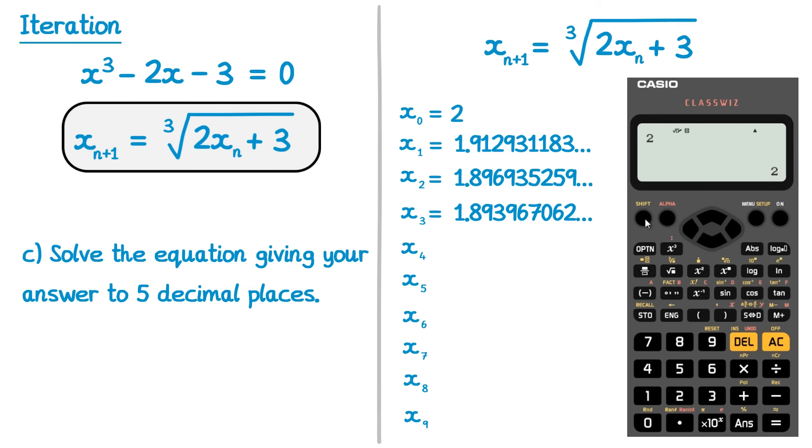Now we'll go ahead and do the iterations. So we need to do the cube root, because it started with a cube root. That's on shift. So shift, cube root. Then it was 2 times the previous answer. So I know the previous answer, x0. That was 2. So I could just press another 2 at this point. Or I could press the answer button, because that's the number the calculator most recently calculated. Then it was plus 3. And then press equals. And you can see the number on screen matches the one that we calculated.